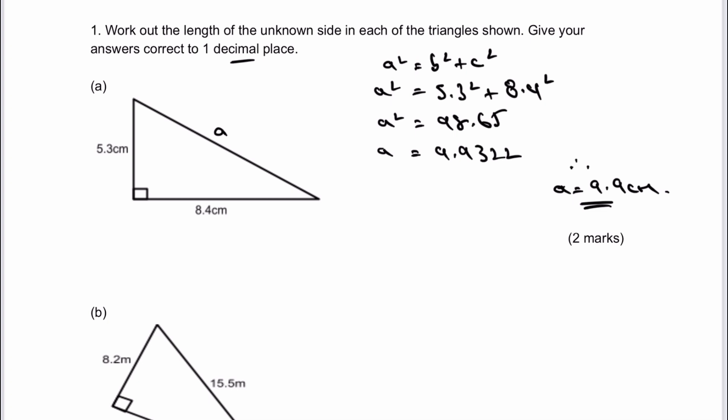Now some people might write this as c squared equals b squared plus a squared or something else. For me personally, I'm just going to use a as being the unknown, but it doesn't really matter, providing you're absolutely sure that it's the square of the hypotenuse is equal to the sum of the square of the other two sides. So there's a few practice questions here.